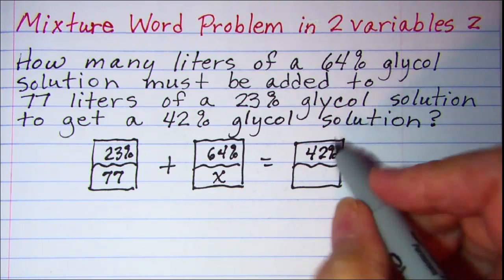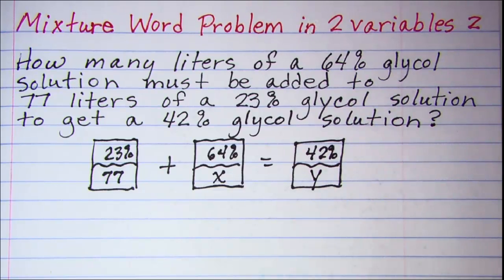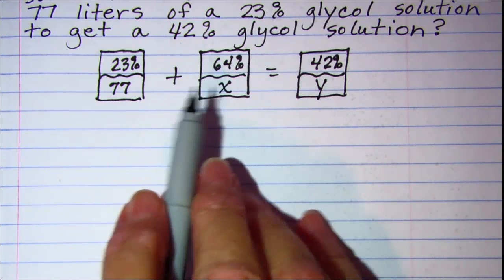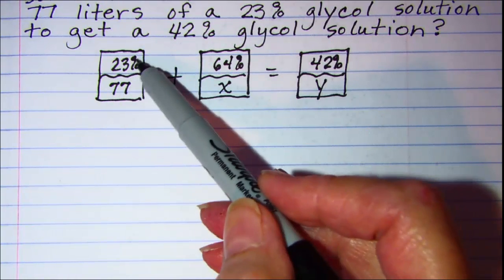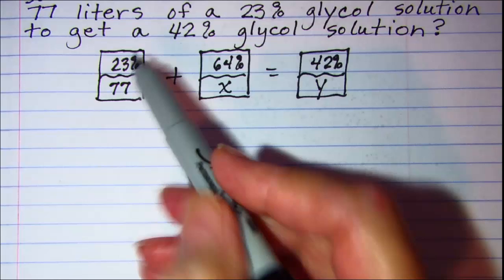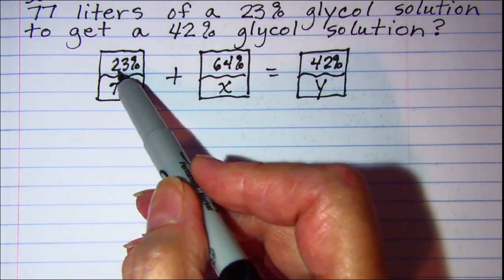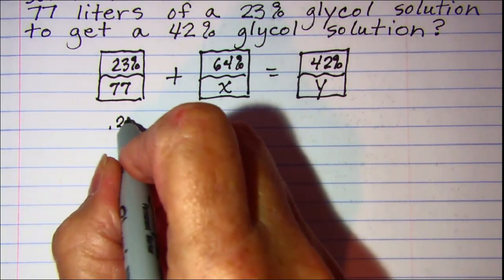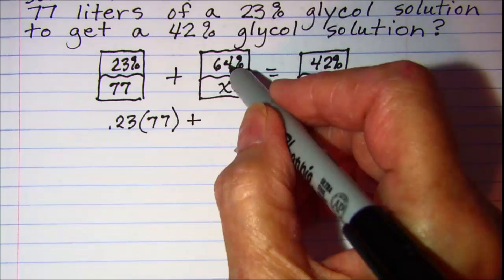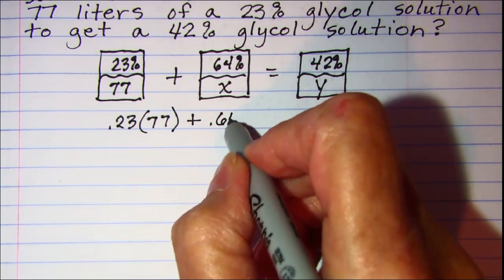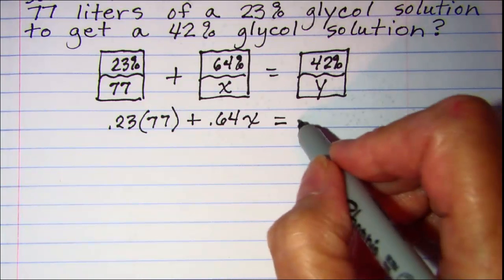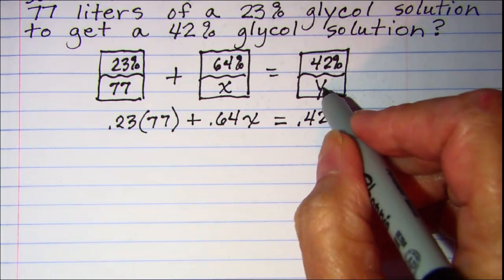Now I don't know how much this is, so I'll let that be y. Now once I have my graphic organizer completed, then my equation comes from multiplying percent times amount plus percent times amount equals percent times amount. I'm going to write my percent as a decimal, so this will be .23 times that amount which is 77 plus .64 times that amount which is x and then equals .42 times this amount which is y.